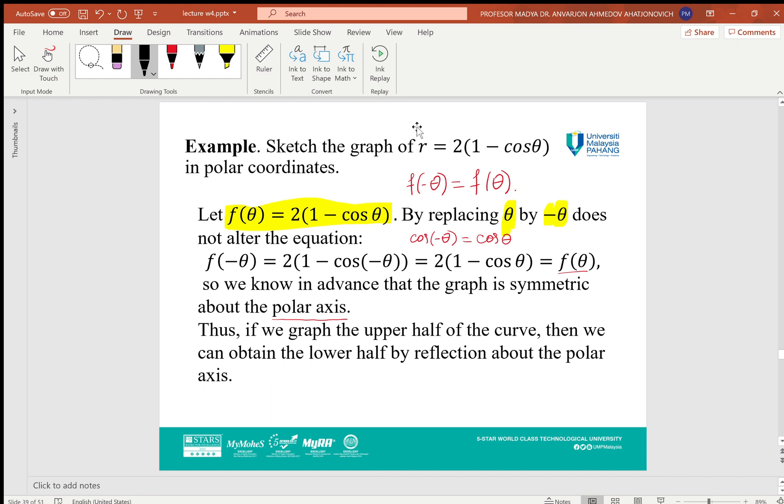Now sketch the graph of this function in polar coordinates. Here we need to use the symmetricity test to make it easy. If it is symmetric about some axis, we plot the graph in one part, then we just reflect symmetrically to the initial position. You can see here, if we replace θ by -θ, it does not change the equation, so it is symmetric about the polar axis.